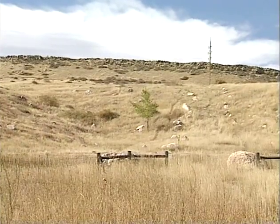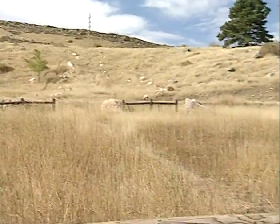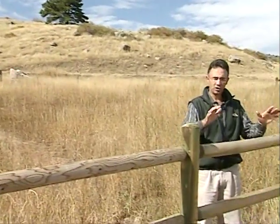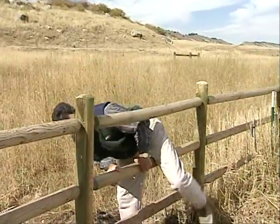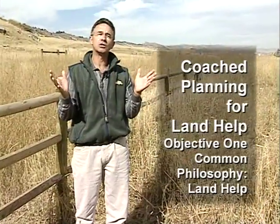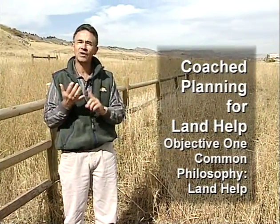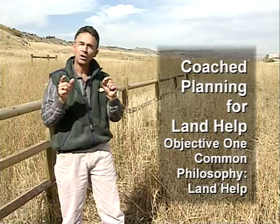We're about to make a transition from the more natural environment to an environment altered by humans. This brings me to my first three objectives, which I'll summarize as 'coach planning for land help.' Land help is the objective — we want to make the land better somehow by helping people, and that's where the coaching comes in.